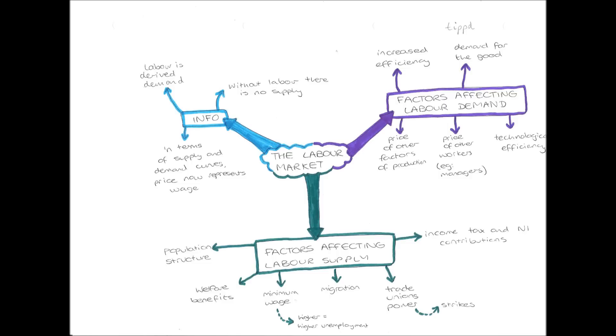Now what you need to know is that just like any other good has a market, so for example the TV market or the computer market, labour as in workers and the workforce also have a market. The first thing you need to know is that labour is derived demand. This means that demand is derived from the demand for the good. So if there is no demand for a good, then there is no demand for labour to produce that good. However, if there is high demand for that good, then there will be high demand for labour to produce that good.